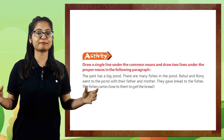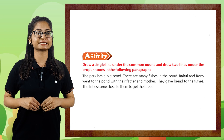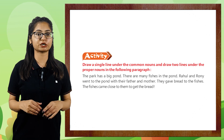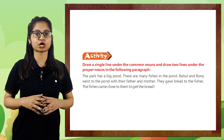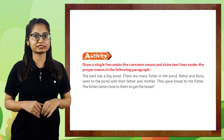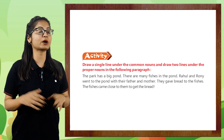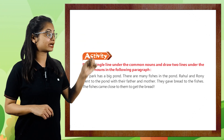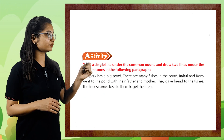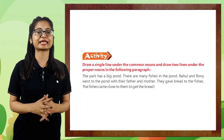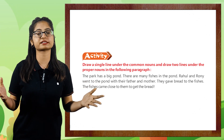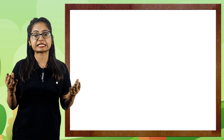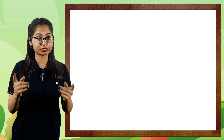Concluding the chapter, we have an exciting activity. Draw a single line under the common nouns and draw two lines under the proper nouns in the following paragraph. You have been given a paragraph — draw a single line under all common nouns and double lines under all proper nouns. This seems easy and very interesting — you have to do it by yourself. Thank you for today's lecture. We will meet in the next session with an interesting chapter. Until then, don't forget to revise!